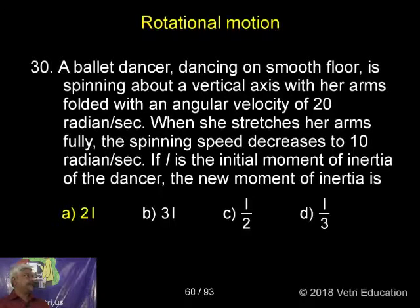A ballet dancer dancing on smooth floor is spinning about a vertical axis with her arms folded with an angular velocity of 20 radians per second. When she stretches her arms fully, the spinning speed decreases to 10 radians per second. If I is the initial moment of inertia of the dancer, the new moment of inertia is...